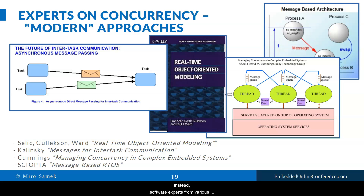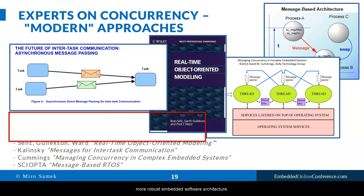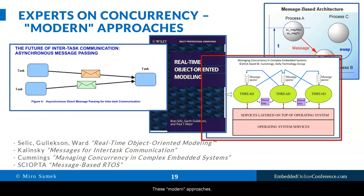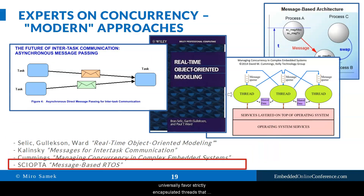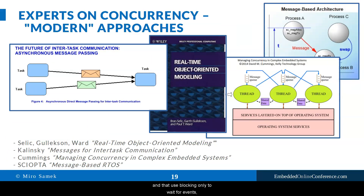Instead, software experts from various industries independently started to arrive at the same conclusions about safer and more robust embedded software architecture. These modern approaches universally favor strictly encapsulated threads that don't share anything, are allowed to communicate only by exchanging events or messages, and that use blocking only to wait for events, but otherwise don't block at all.